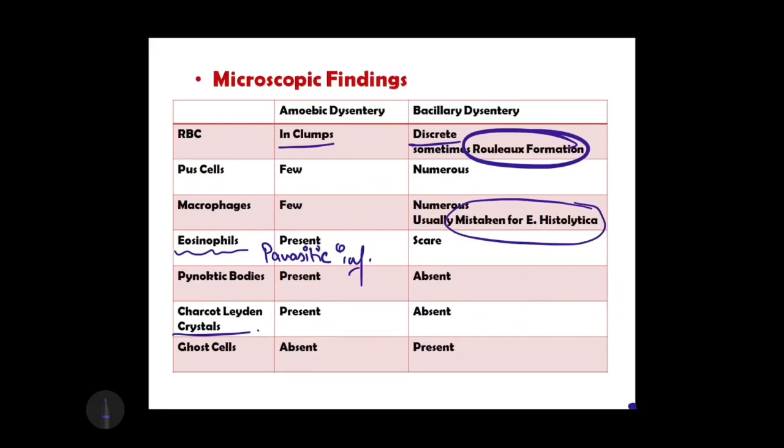Since eosinophils are present in amoebic dysentery, there is a chance of Charcot-Leyden crystals being found in amoebic dysentery stool, and they are absent in bacillary dysentery.